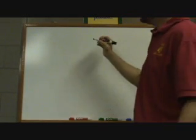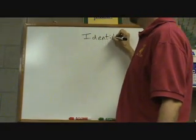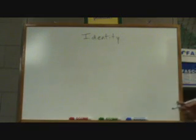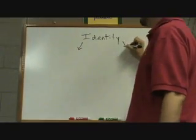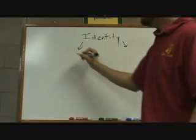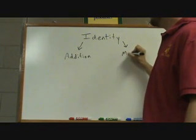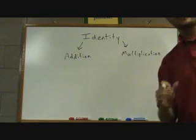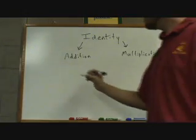The other properties are fairly straightforward and simple. There's the identity properties. And the identity, if you think of the word identity, it means who you are, what you are, your essence. And the identity properties splits into two. There's the what's called the additive identity and the multiplicative identity. So, in other words, there's the identity for addition and there's the identity for multiplication.